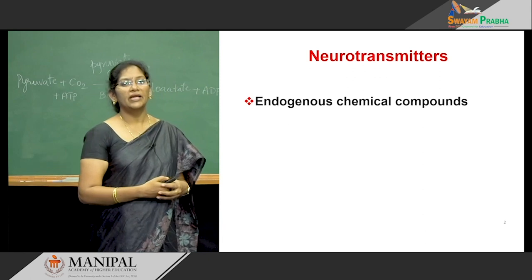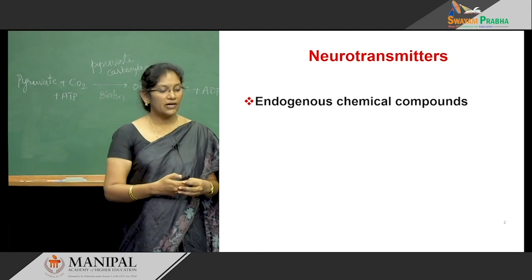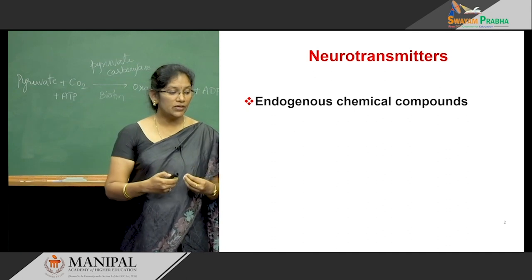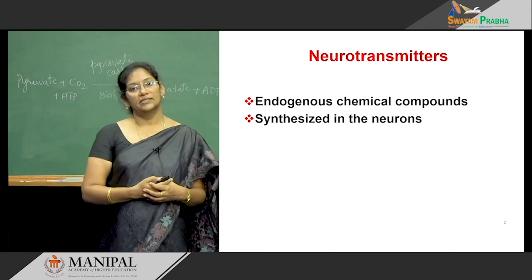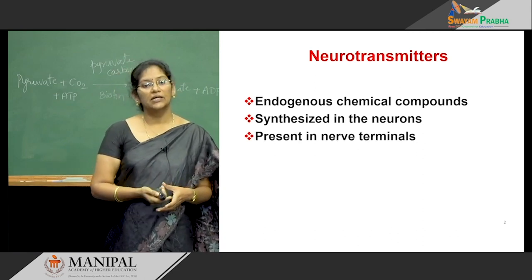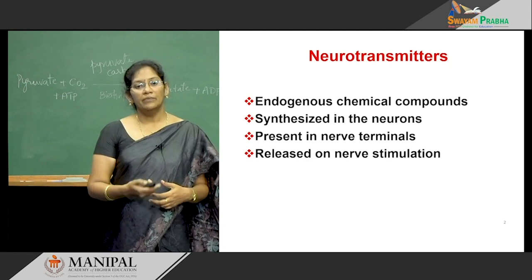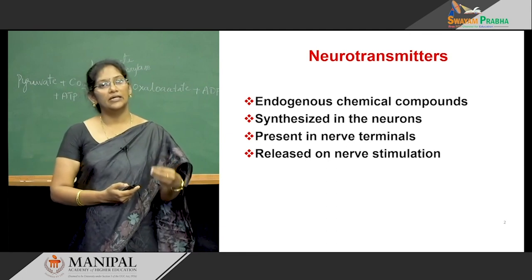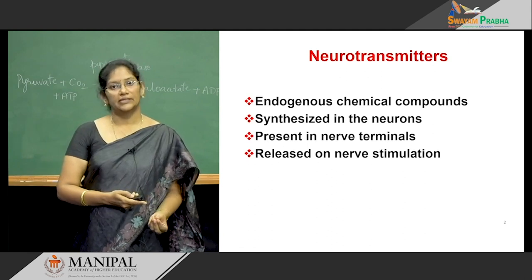The neurotransmitters are mainly the endogenous chemical compounds, also known as the chemical messengers between the neurons and the target cell. They are mainly synthesized in the neurons and are especially present in the nerve terminals. On nerve stimulation, these neurotransmitters are released into the synaptic cleft and go to bind with the receptors on the target cell.